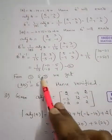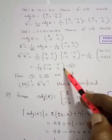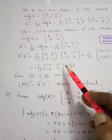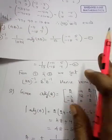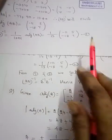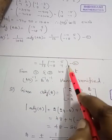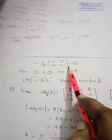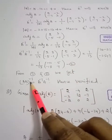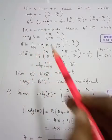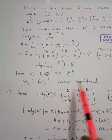Now look at equation number 1 and equation number 2. Both matrices are equal. That is, both right-hand sides are equal. That means AB whole inverse is equal to B inverse into A inverse — these two matrices are equal. Hence verified.